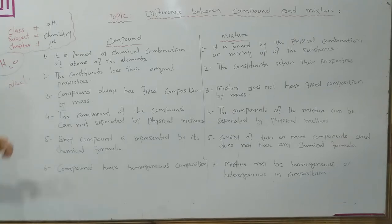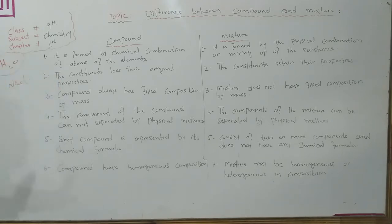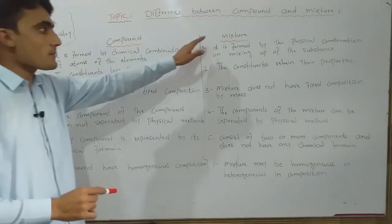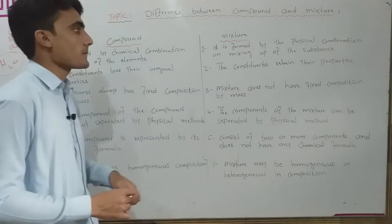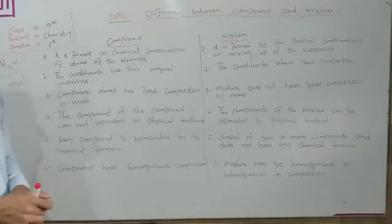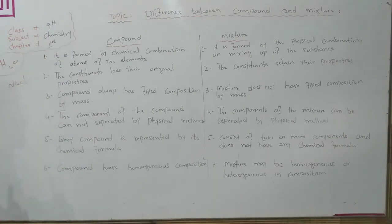Chemical bonds are formed by the chemical combination of the substances. In other words, the mixture is formed by the physical combination of the substances.